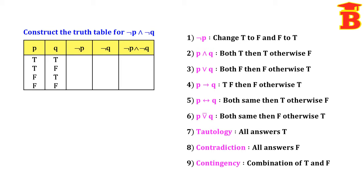Now find NOT P: change T to F and F to T. So T→F, T→F, F→T, F→T. Similarly for NOT Q: change T to F and F to T. So T→F, F→T, T→F, F→T.